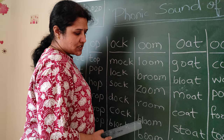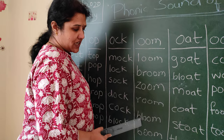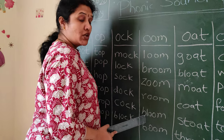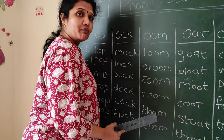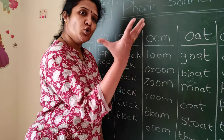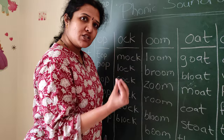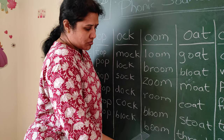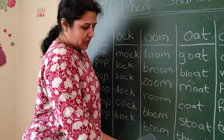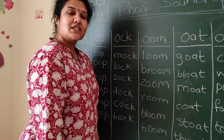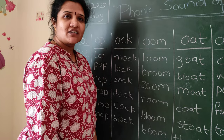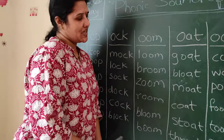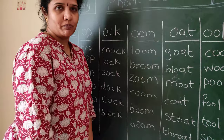B-L — what is the sound of BL? BL plus OOM is BLOOM. The flower blooms — that is BLOOM. And B-O-O-M — BOOM, the sound of crackers. What is the sound of crackers? BOOM.